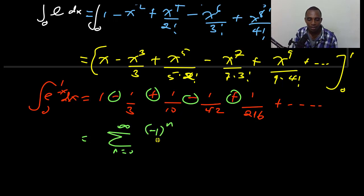So I could write that as negative 1 to the power n. Then you've got odd numbers here, 3, 5, 7, 9. So that's 2n plus 1 to represent odd numbers.